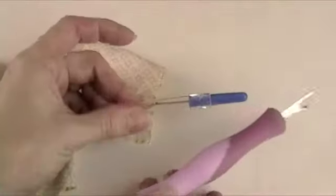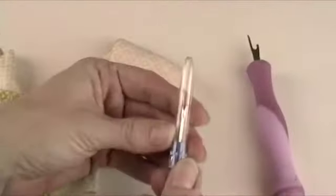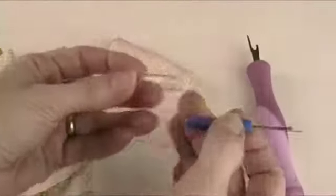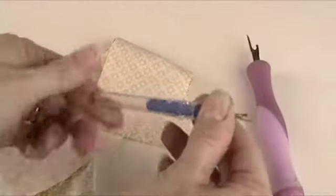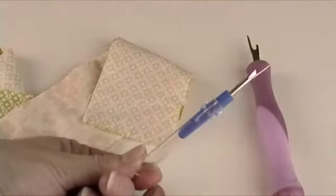Seam rippers come in a lot of different shapes and sizes. If you bought a brand new machine, you almost certainly got a seam ripper with it. Usually it's one of these smaller ones where the cap comes off and makes a handle to go with the seam ripper.